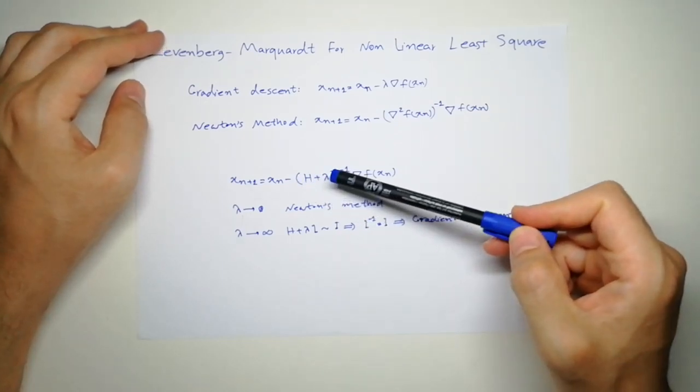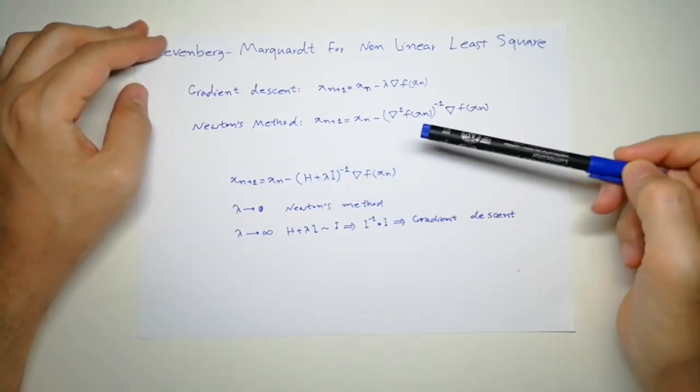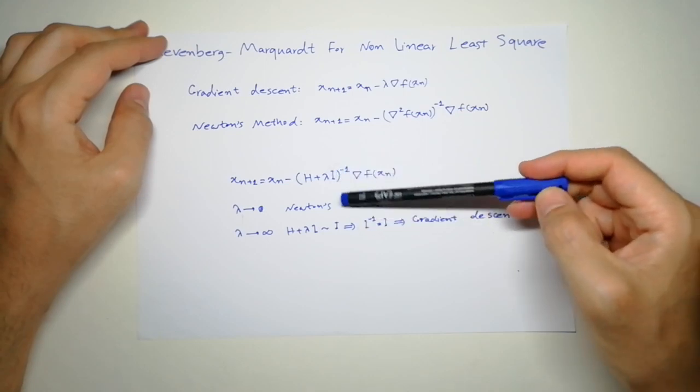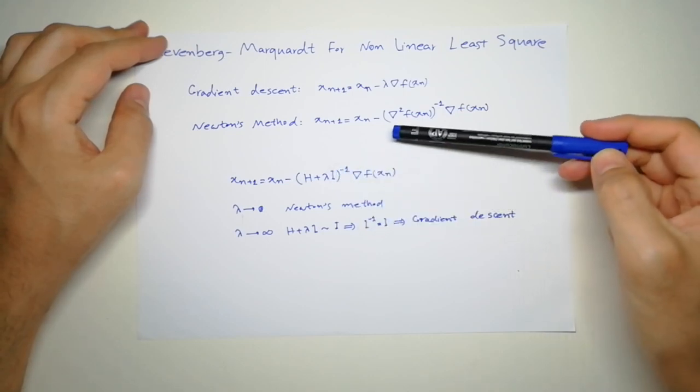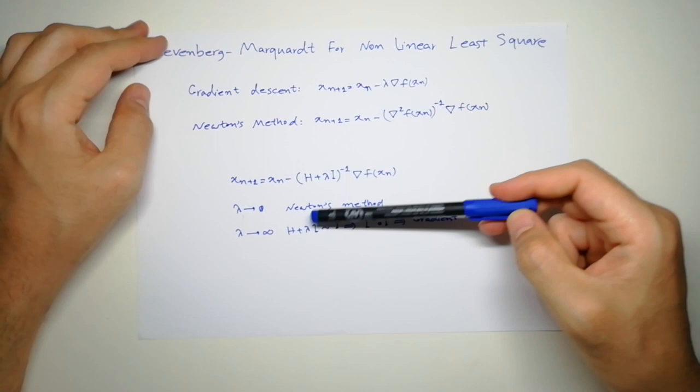H will lose its importance, so it's going to be the identity matrix and the inverse of itself, so it becomes gradient descent. If lambda goes to zero, we have H, so it becomes Newton method.